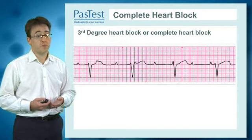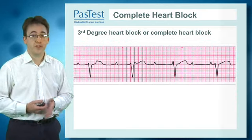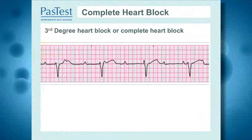Finally, we have third degree block, which of course was the nature of this question. Once again, you see here a long regular time interval between each of the ventricular complexes and discrete P-waves, which in some circumstances appears fixed, but on other beats there's no relationship whatsoever between the P-wave and the QRS complex. So there's electrical and mechanical dissociation here.